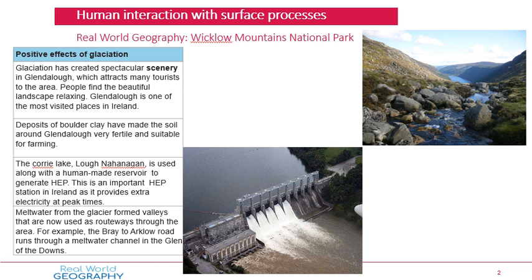The final positive: meltwater from glaciers formed valleys now used as routeways through the area. For example, the Bray to Arklow road runs through a meltwater channel in the Glen of the Downs. When that really big thick glacier melts, the ice turns into water creating a powerful river. Because these glaciers were over one kilometre thick, there was so much meltwater that it eroded a valley through the mountains. That valley can then be used as a routeway - in the present day there's a road going through it.